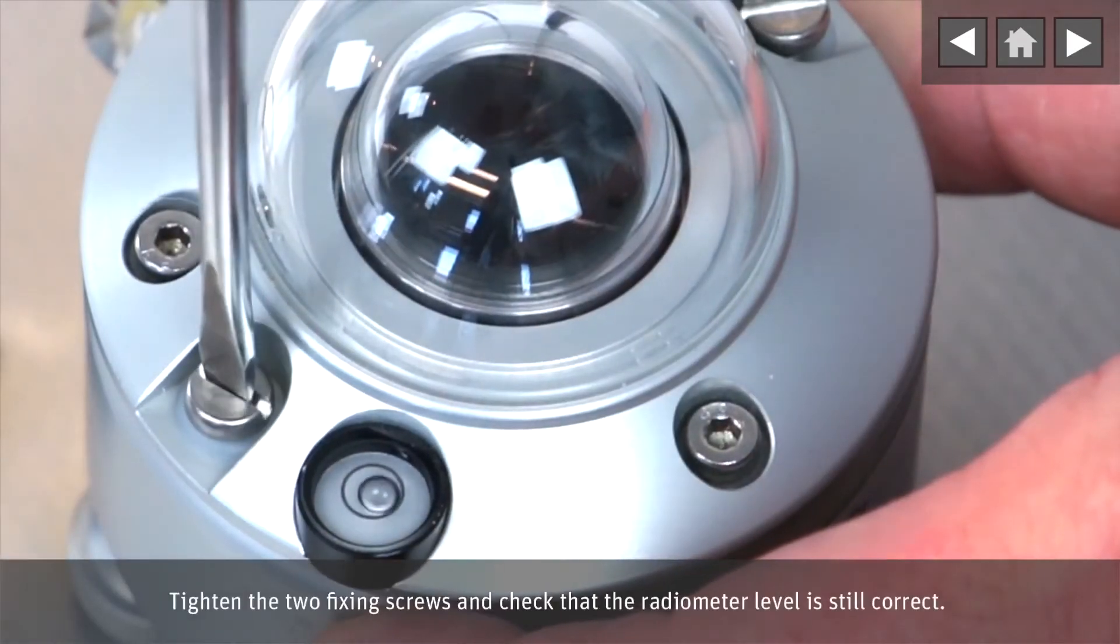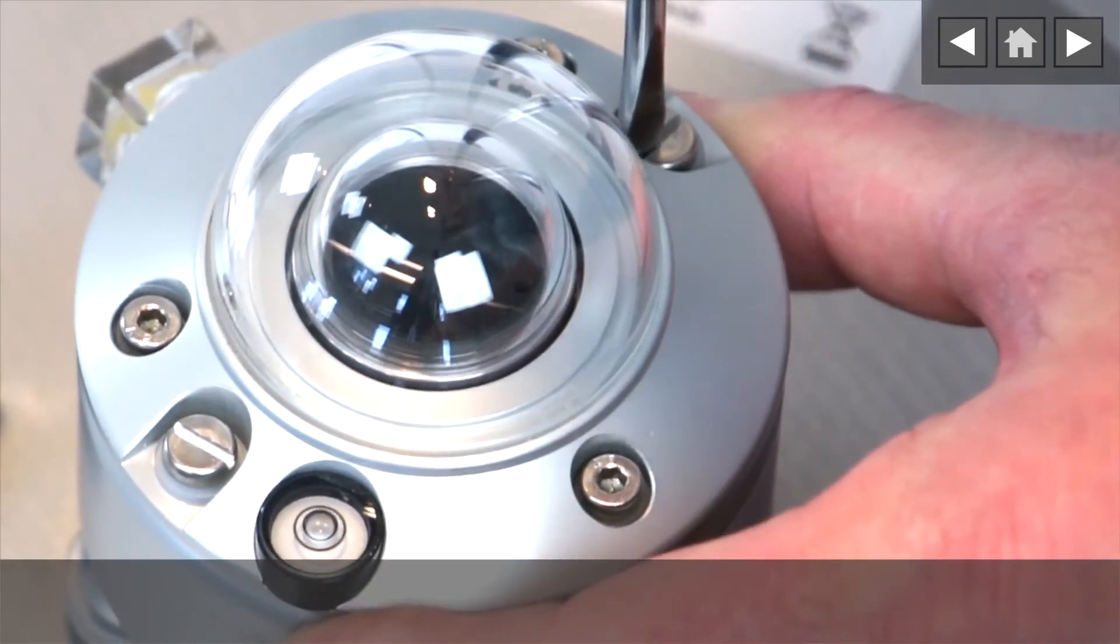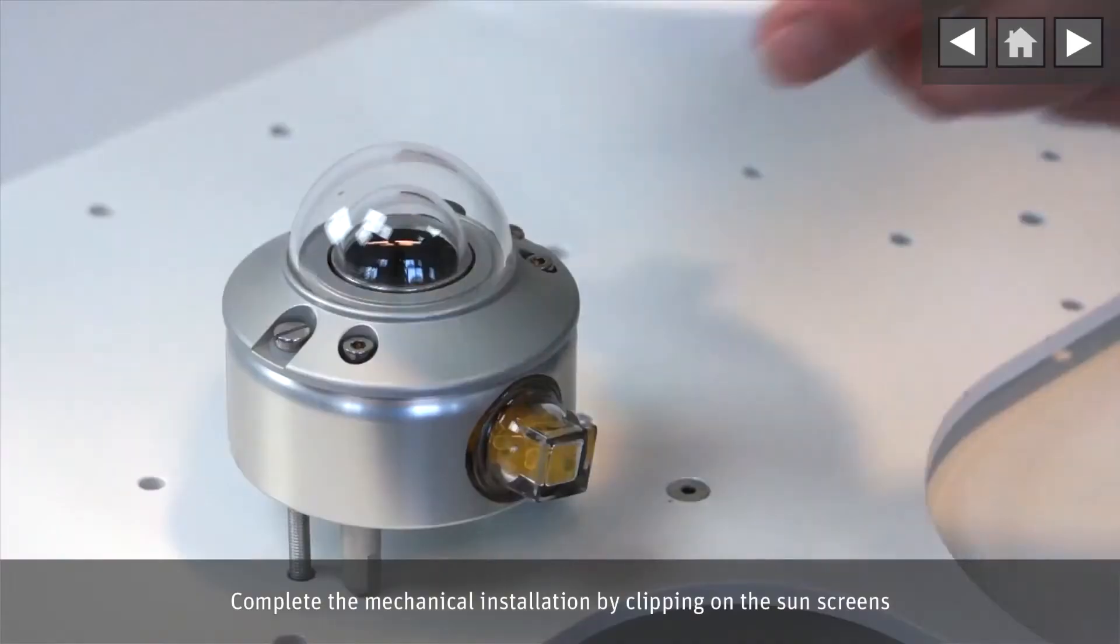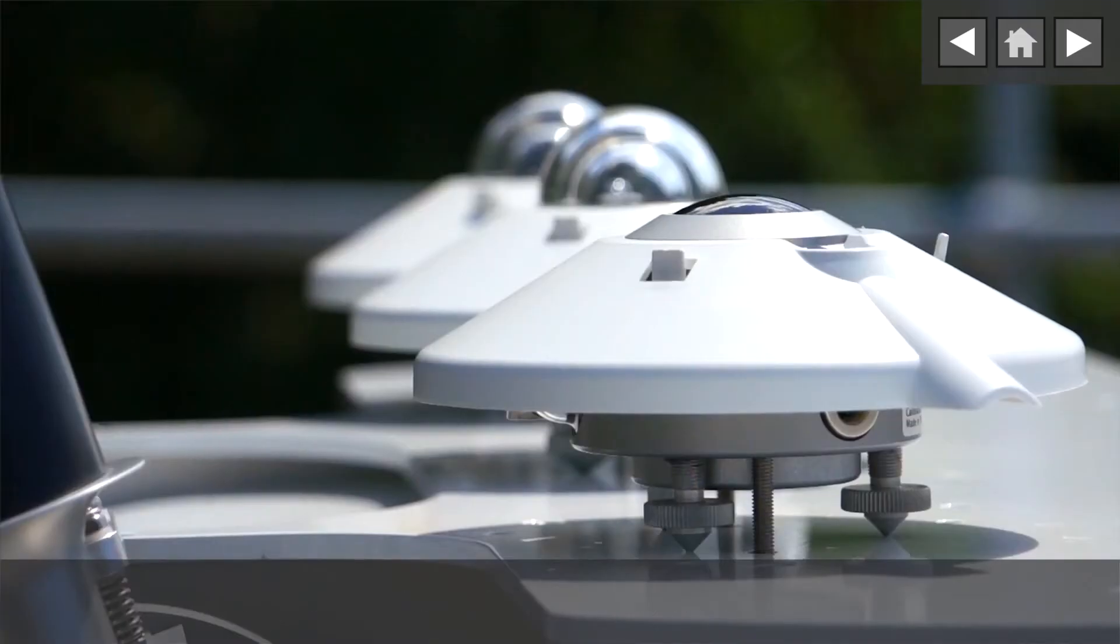Tighten the two fixing screws and check that the radiometer level is still correct. Complete the mechanical installation by clipping on the sunscreens. The cables will be fitted later.